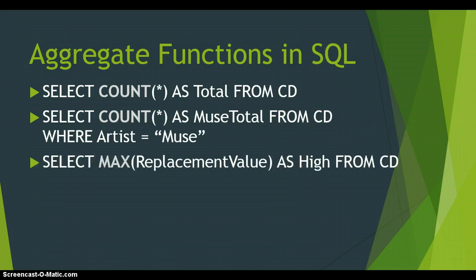Another aggregate function is MAX. The next aggregate functions revolve around integers, currency, or some sort of number, because you can't find the max value of text — you need numbers. The only suitable numeric field in the CD table is the replacement value. So we're going to find the maximum replacement value and give it a field name of 'high' from the CD table. Let's apply that in Access.